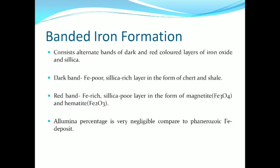Banded iron formation consists of alternate bands of dark and red colored layers of silica and iron oxide. The dark band consists of an iron-poor and silica-rich layer in the form of chert. The red band is characterized by an iron-rich and silica-poor layer in the form of magnetite and hematite.